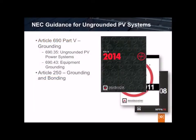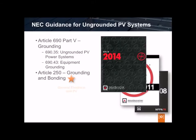However, the National Electrical Code does provide guidance for implementing ungrounded PV arrays, which carry additional safety benefits. Article 690.35 of the NEC covers ungrounded PV power systems, and Article 690.43 describes equipment grounding requirements. Additionally, Article 250 gives additional details on grounding and bonding requirements for general electrical, but relevant to PV power systems.